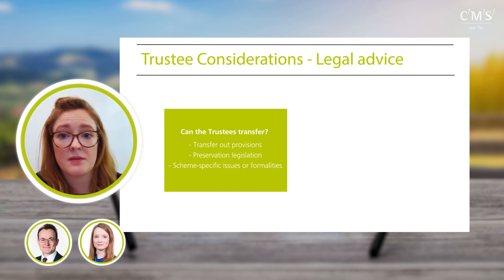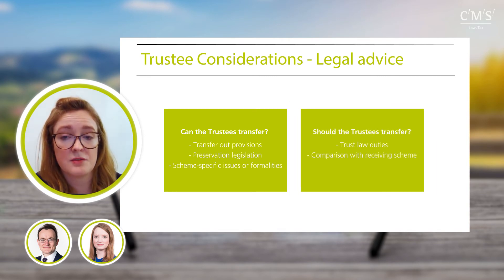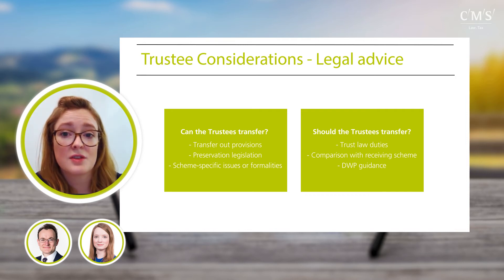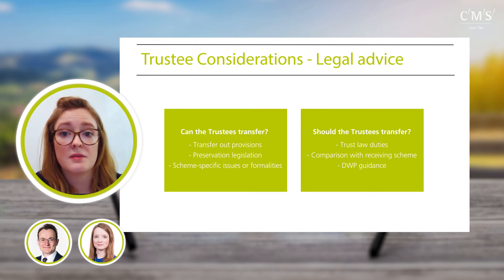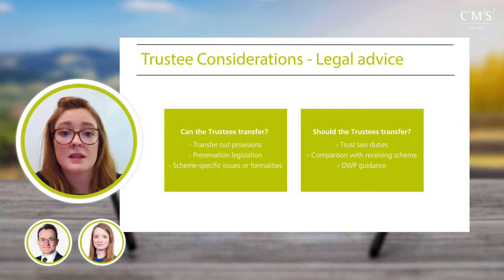There might also be scheme-specific issues with benefit structure or investments acting as practical hurdles before transfer can take place. There may also be specific requirements in the rules — for example, a particular form of actuarial advice may be required. Trustees must act in the interests of the beneficiaries; in a DC context this requires acting in their financial interests. Generally, trustees will want to ensure the terms of the transfer and benefits provided by the master trust are satisfactory, and the resulting position of beneficiaries is broadly no less favourable. They should take relevant advice, fully understand the consequences, carry out due diligence, and consider whether the master trust is an appropriate vehicle, including the balance of powers compared with the existing scheme.